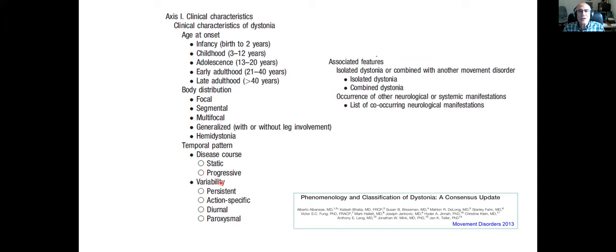In relation to axis one, these are the clinical phenotypes — a description of the different ways in which you can describe the clinical syndrome. There can be the age of onset, the body distribution, the temporal pattern, and associated features. This is important whether dystonia is isolated or combined with other movement disorders, or could occur potentially with other neurological or systemic manifestations. If you list all these different features, you would come up with the clinical syndrome.